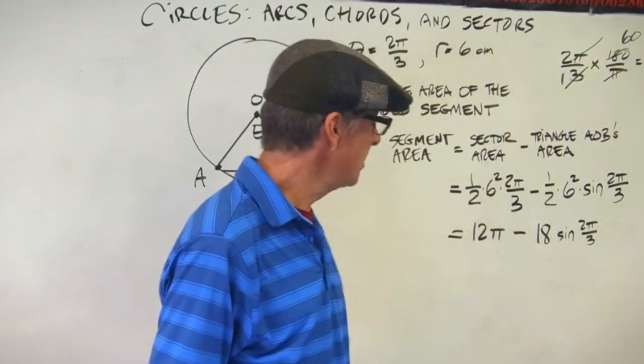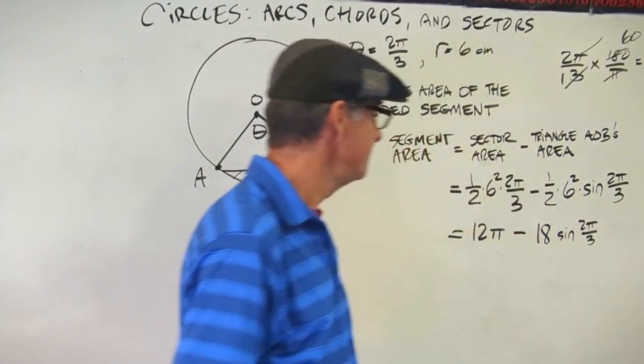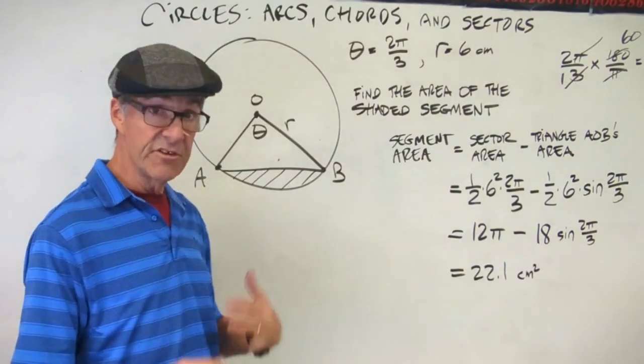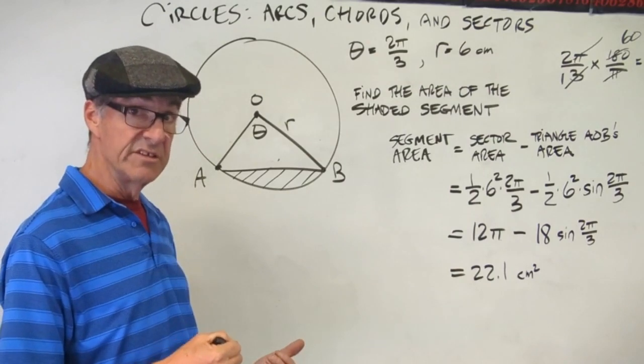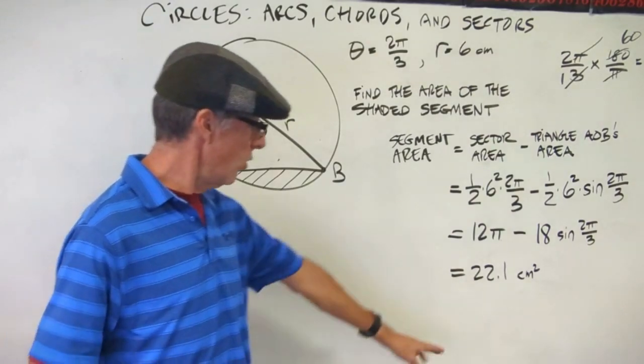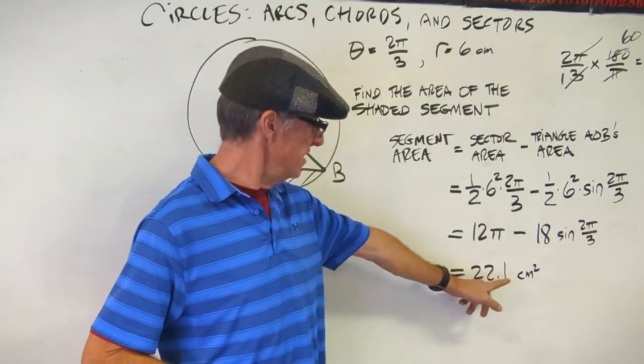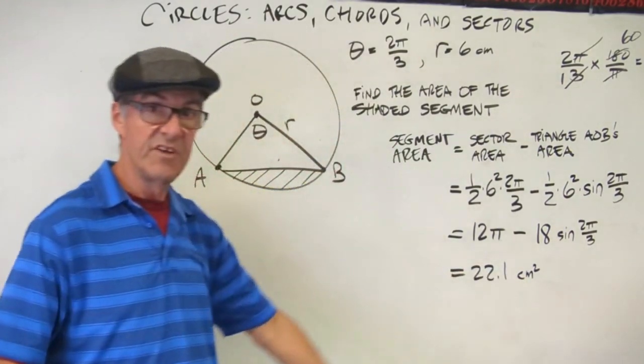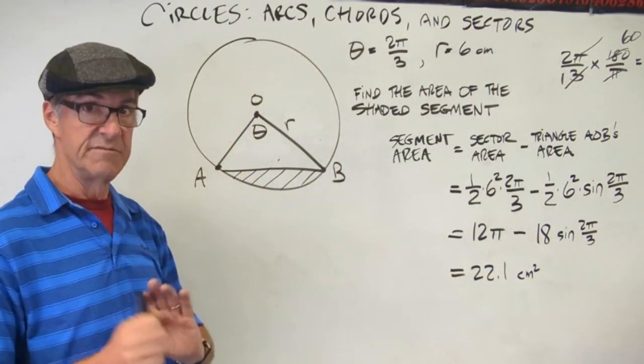So now I can plug 120 in for my sine function and do my calculation and finish it off. Once you plug that all in, either way—change your calculator to radians or convert to degrees and do that—you'll end up with 22.1 centimeters squared. Three sig figs. We are done.